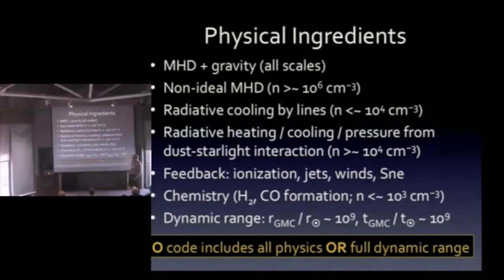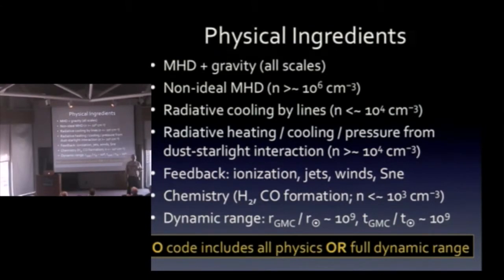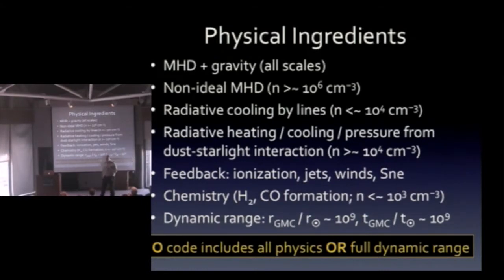Going back to my list of physics: MHD and gravity cannot be the answer — you cannot explain the origin of the IMF using only those, and I can prove that in two lines of algebra. For a system consisting only of isothermal MHD and gravity, there are three dimensionless numbers that fully characterize it — the Mach number, the Alfvén Mach number, and the virial ratio. For those three numbers there exists a transformation that leaves them invariant but changes the mass scale arbitrarily, which immediately proves you cannot get a characteristic mass. Non-ideal MHD doesn't solve it either if the ionization fraction scales as a power law in density. So it's probably in the radiation physics.